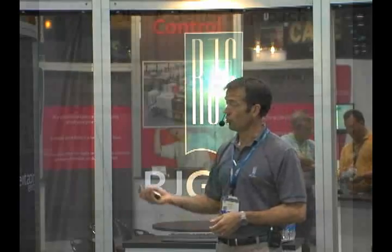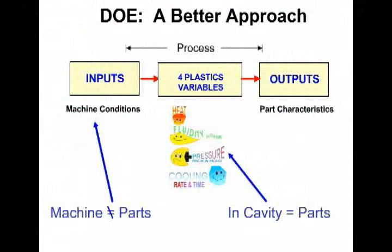You want those variables to be from the perspective of the four plastics variables: plastic conditions, plastic pressure, flow, cooling, and heat. When the variables you use are focused on those four, the DOE is much more efficient and the output of that DOE is going to have direct correlations to the part characteristics.